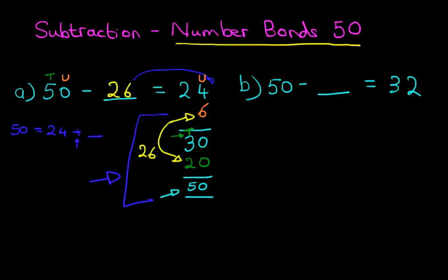I'm going to start with the units. In 32 we've got 2 units. In 50 we've got 0, so what number added to 2 is going to make it effectively 0? We need to add 8.